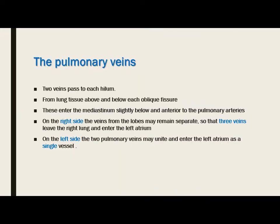The pulmonary veins follow the intersegmental septum and there are two veins passing to each hilum from the lung tissue above and below each oblique fissure. They enter the mediastinum slightly below and anterior to the pulmonary arteries. On the right side there are three veins draining the right lung, one from each lobe, entering the left atrium. On the left side, the two pulmonary veins unite and enter the left atrium as a single vessel.